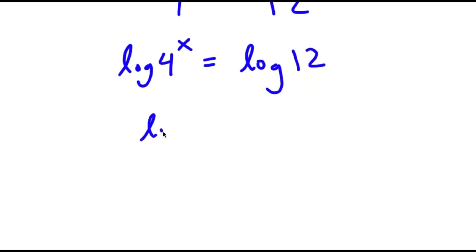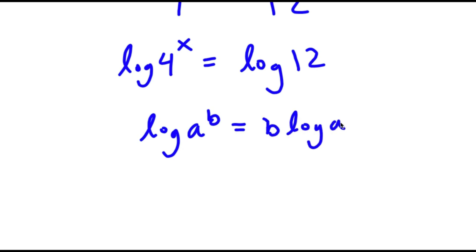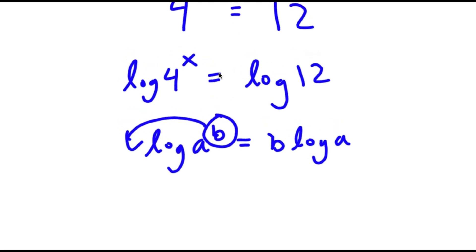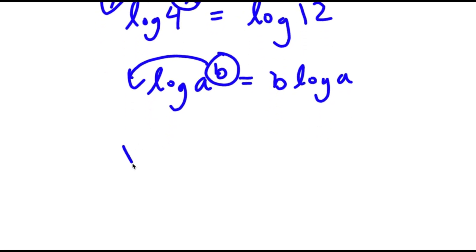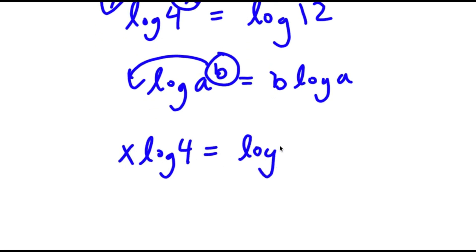If I have something in the form log a to the power of b, this is equal to b times log a, because all I have to do is simply move my exponent to the front. So for log 4 to the power of x, I can move x to the front. So this is going to equal x times log 4 is equal to log 12.